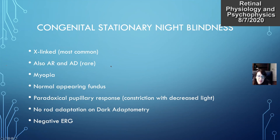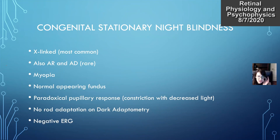Patients with congenital stationary night blindness tend to be myopic. The classic three findings are decreased night vision, decreased vision attributed more to myopia, and nystagmus. Their fundus will look normal. They may have a paradoxical pupillary response where lower light levels cause pupillary constriction instead of dilation. They'll have no rod response on dark adaptometry and will have a negative ERG — this negative ERG is also a classic boards question.